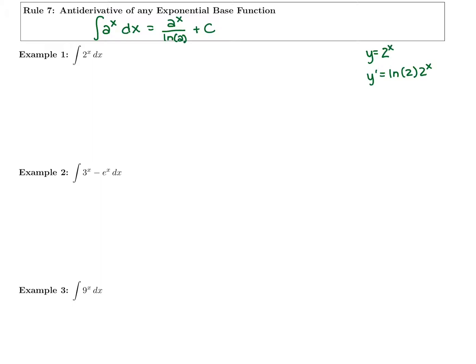So the derivative of 2 to the x was ln of 2 times 2 to the x. Antiderivative you divide, so it's going to be 2 to the x divided by ln of 2. We could use that on the next one.